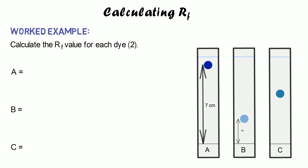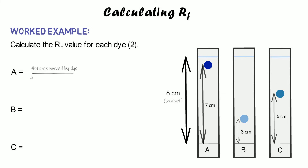First, measure the distances the dyes have travelled: seven centimetres, three centimetres, and five centimetres. Then measure the distance the solvent has travelled from the baseline to the solvent front, which is eight centimetres for all three. Using RF equals distance moved by dye divided by distance moved by solvent: for dye A, seven divided by eight gives 0.875 — less than one, perfect.